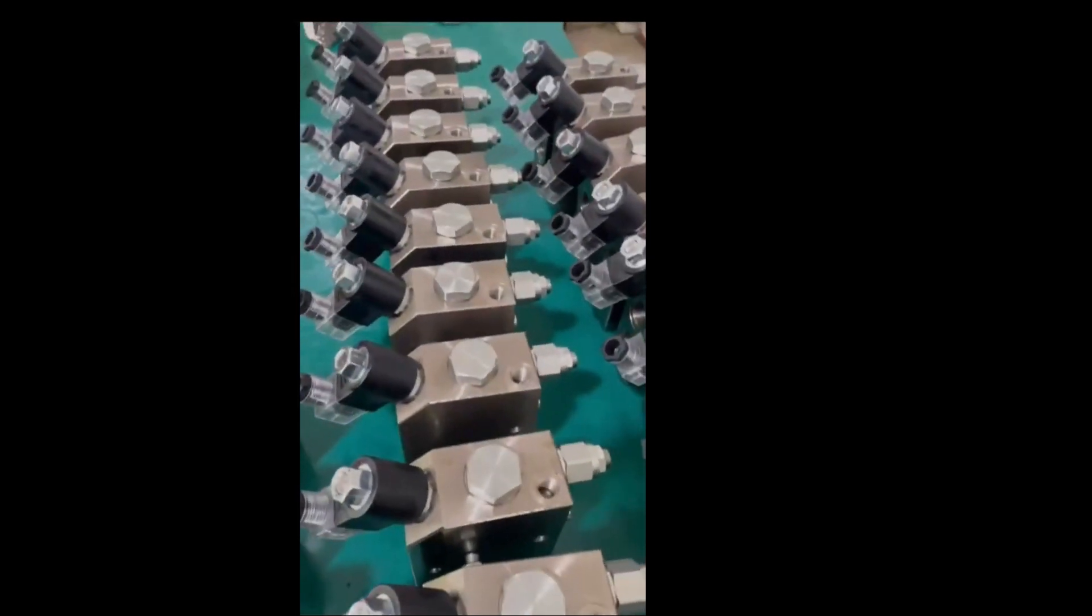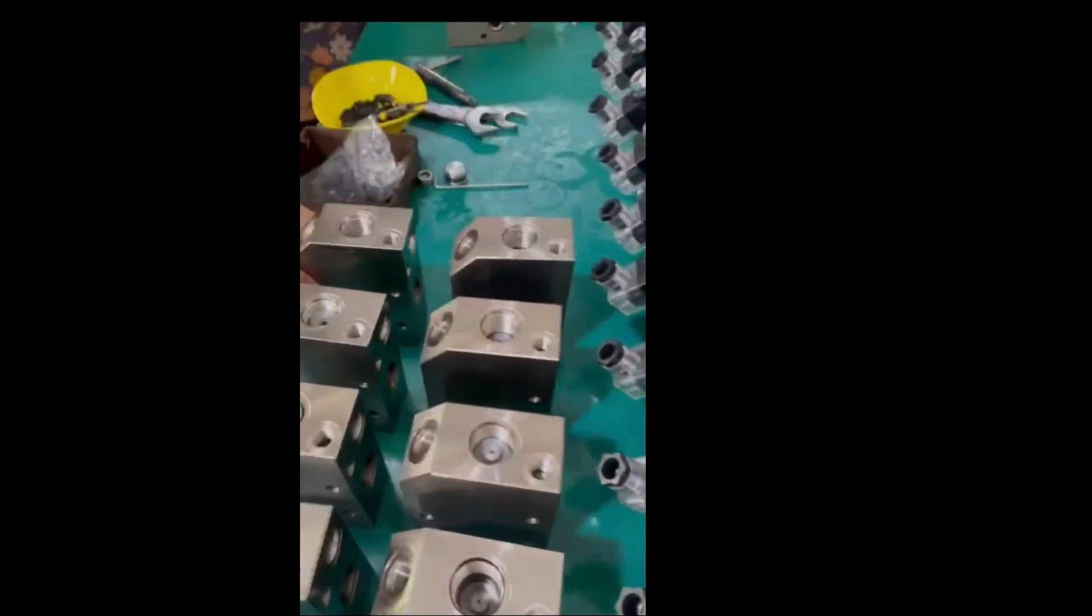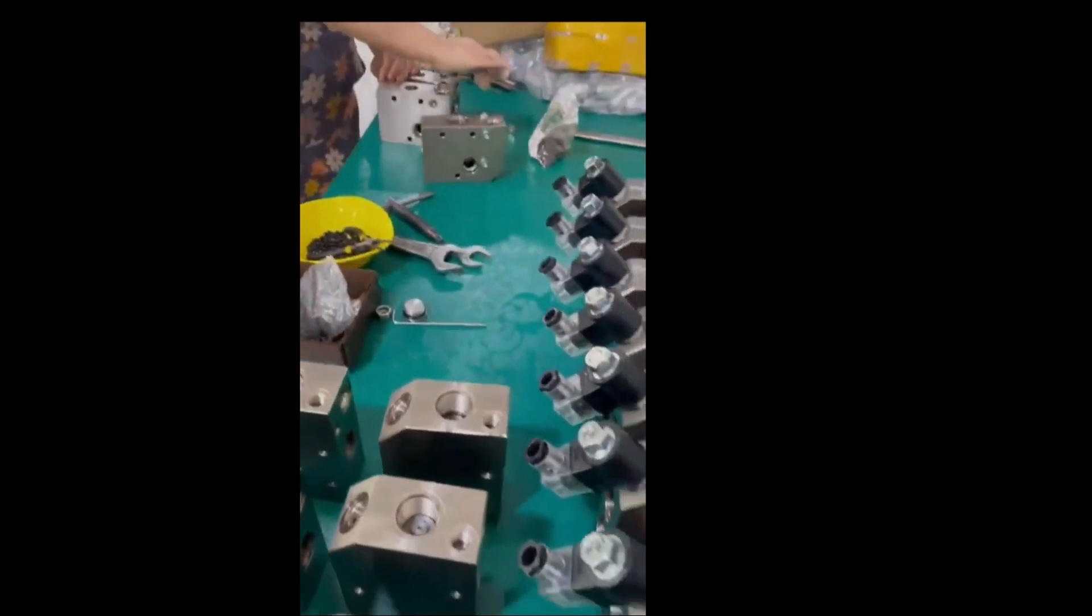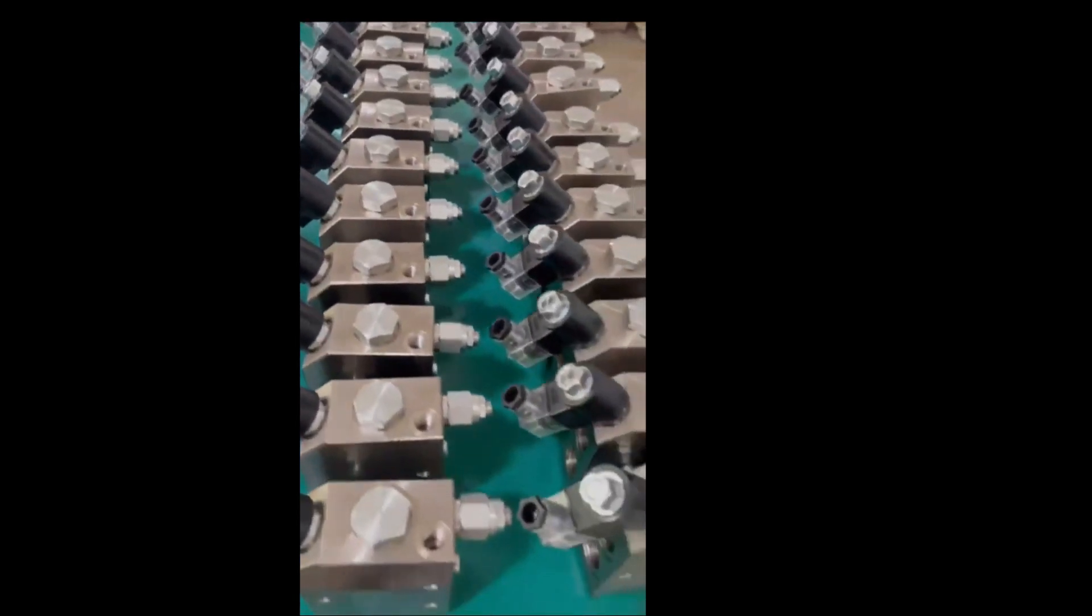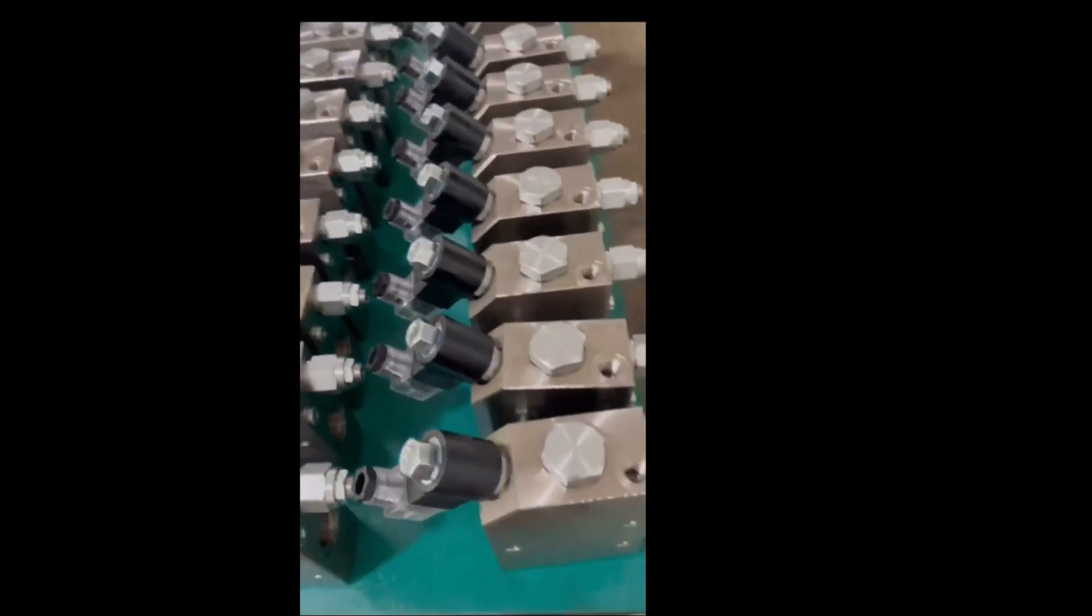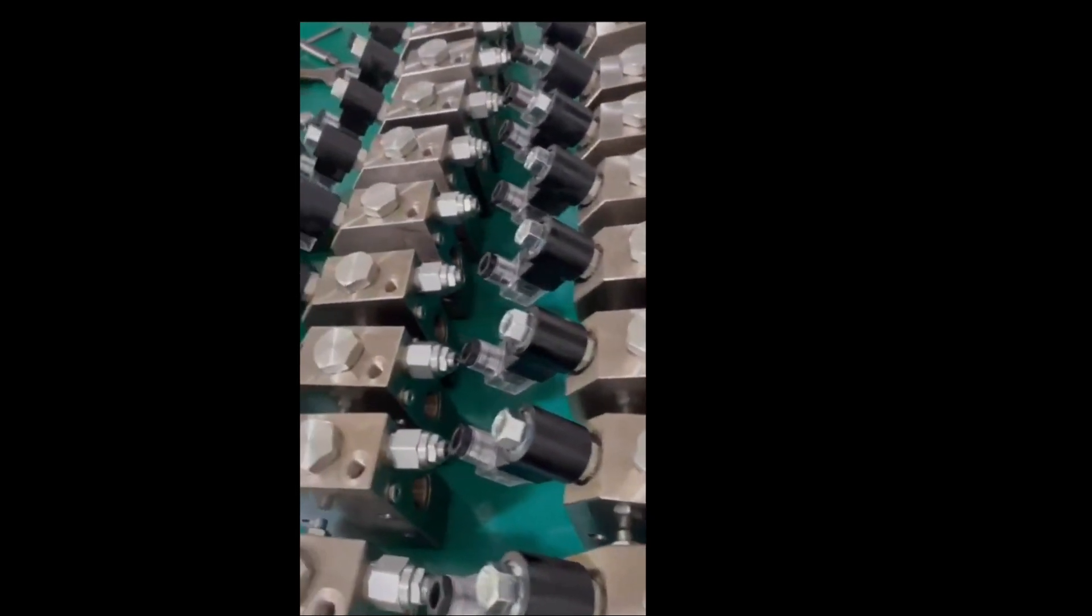The hydraulic flow divider valve is used on backhoe loaders JCB3CX, JCB3DX, JCB4CX, CASE590, and KATO to enable hydraulic braking operation.